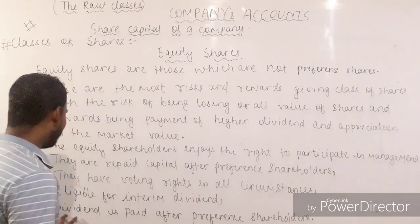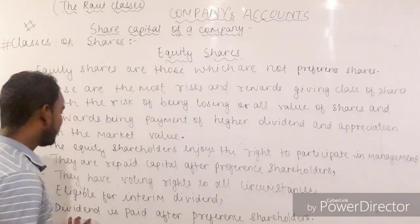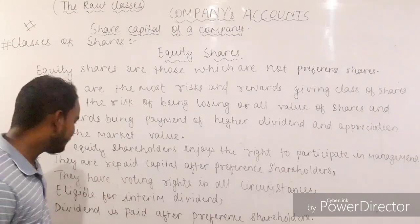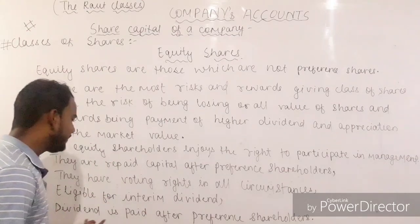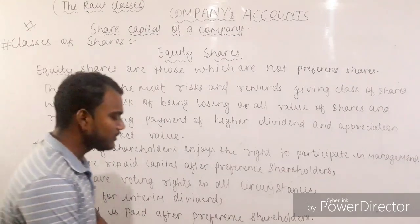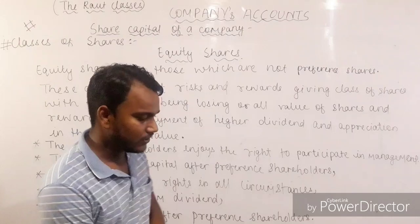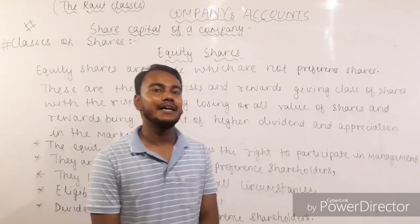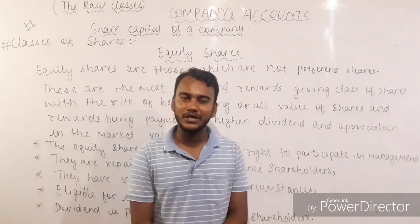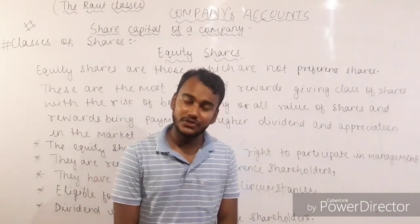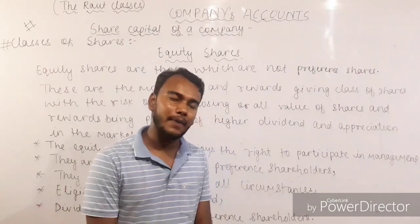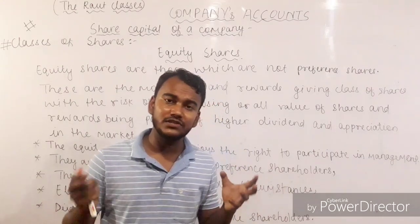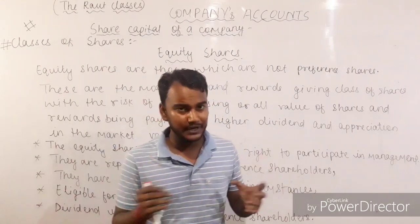The fifth point describes that equity shareholders are paid dividend after preference shareholders. The regular payment of dividend is paid to preference shareholders first, and equity shareholders are paid after that.